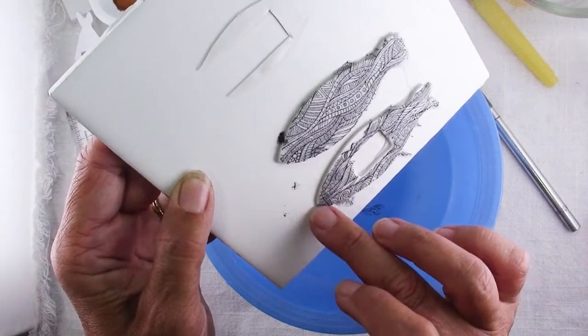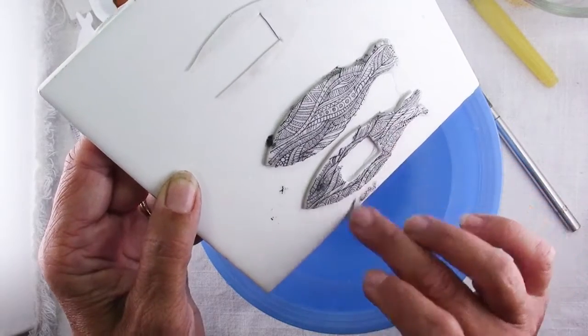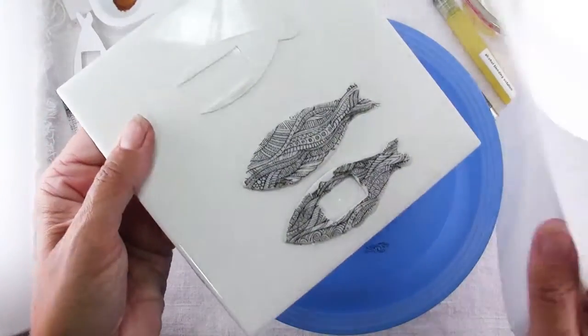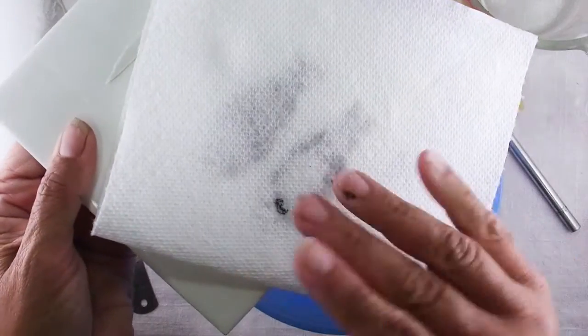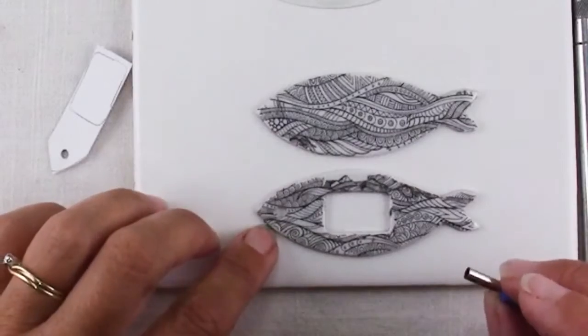Be very gentle with it at this point. When it's wet, it's quite fragile. You can just clean up these edges. Use a dry paper towel to lightly, and I do mean lightly, blot up the water. There's my design on there.